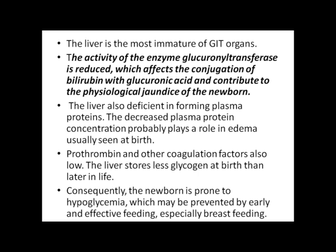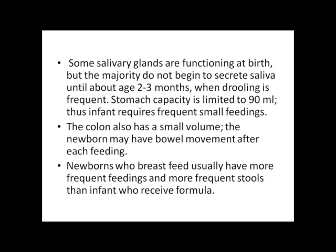The liver is also deficient in forming plasma proteins. Decreased plasma protein concentration probably plays a role in edema usually seen at birth. Prothrombin and other coagulation factors are also low. The liver stores less glycogen at birth than later in life; consequently, the newborn is prone to hypoglycemia, which may be prevented by early and effective feeding, especially breastfeeding. Some salivary glands are functioning at birth, but the majority do not begin to secrete saliva until 2 to 3 months. Stomach capacity is limited to 190 ml, requiring small frequent feedings. The newborn may have a bowel movement after each feeding, and breastfed infants usually have more frequent stools than formula-fed infants.